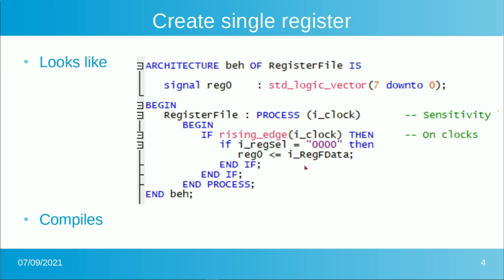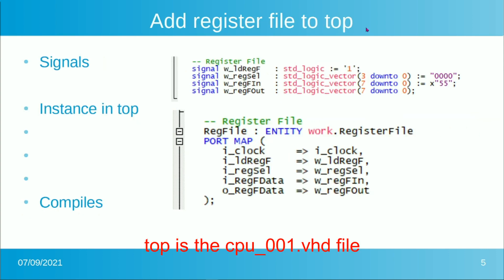If the register select is zero, write register zero with the data coming in on RegFileData. Let's take that register file and add it to the top. We need a signal for the load register file — we don't have one yet, so we'll create one as a single-bit standard logic and set its default value to 1 to always load the register file for now. The register select defaults to zero. The register file output will be those 8 bits. This sets up the conditions needed — the strobe and other selects and data lines — to operate the register file.